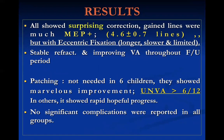Nearly all patients showed surprising correction. The gained lines were much more than expected, with an average of 4.6 lines at the start and 5.3 lines after completion of the six-month follow-up period. With eccentric fixation, patients showed slower and more limited correction. Refraction was stable throughout the follow-up, and there was increasing improvement in visual acuity with the patching program.